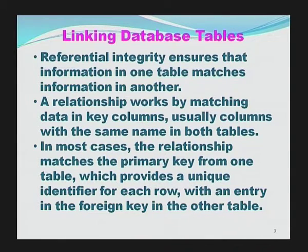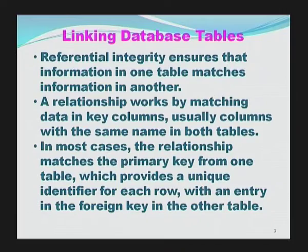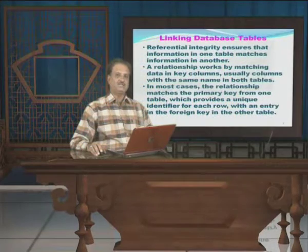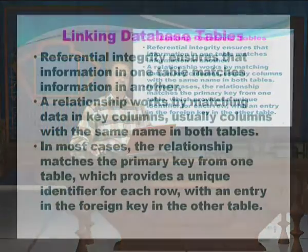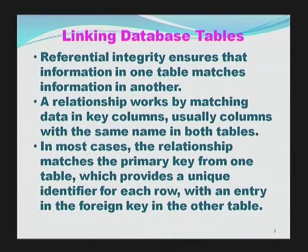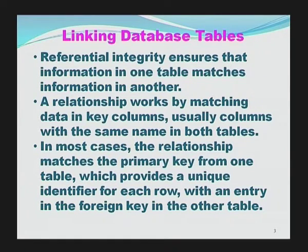A relationship works by matching data in key columns — using columns with the same name in both tables. When we want to link two or more tables, there must be a common field among them. In most cases, the relationship matches the primary key from one table, which provides a unique identifier for each row, with an entry in the foreign key in the other table.